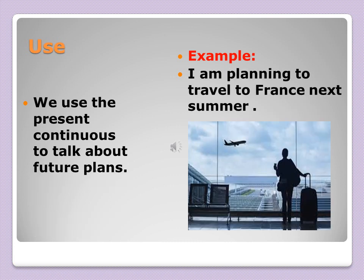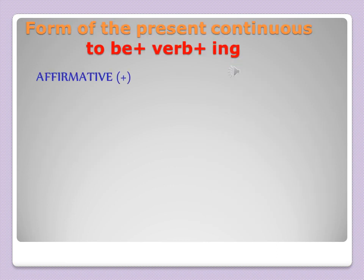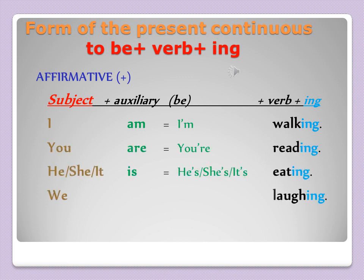Besides using the present continuous for actions taking place at the moment of speaking, we also use it to talk about plans in the future. In English we use one tense to talk about another tense — we use the present continuous to talk about the future. Example: I am planning to travel to France next summer.